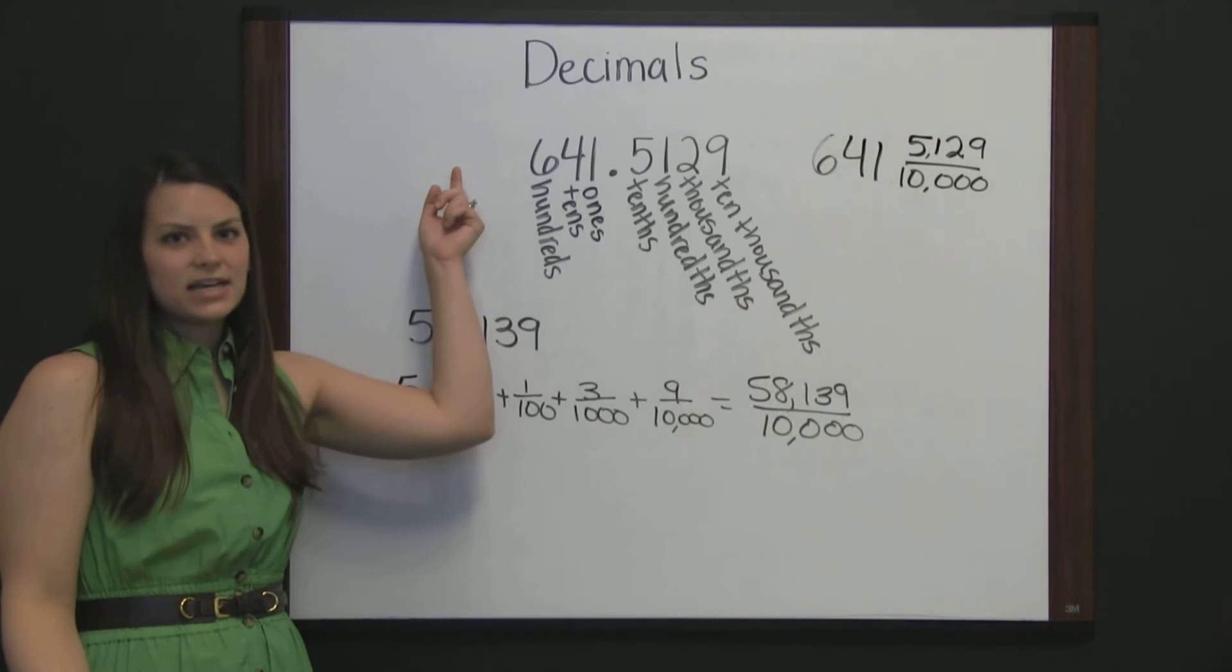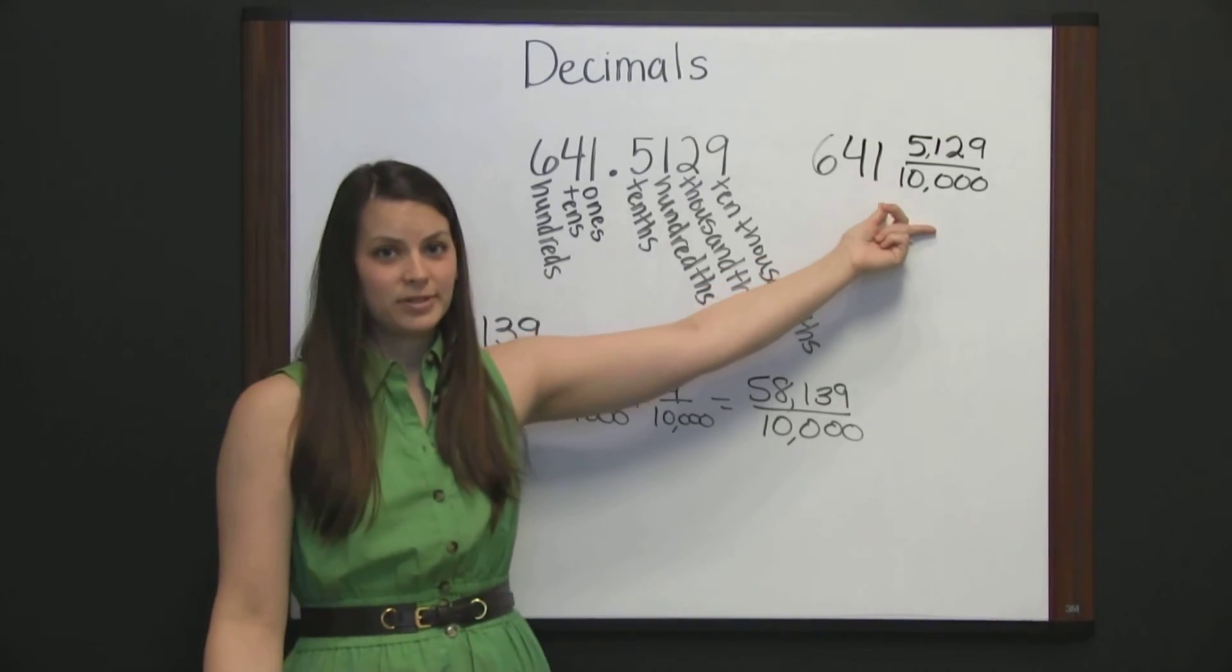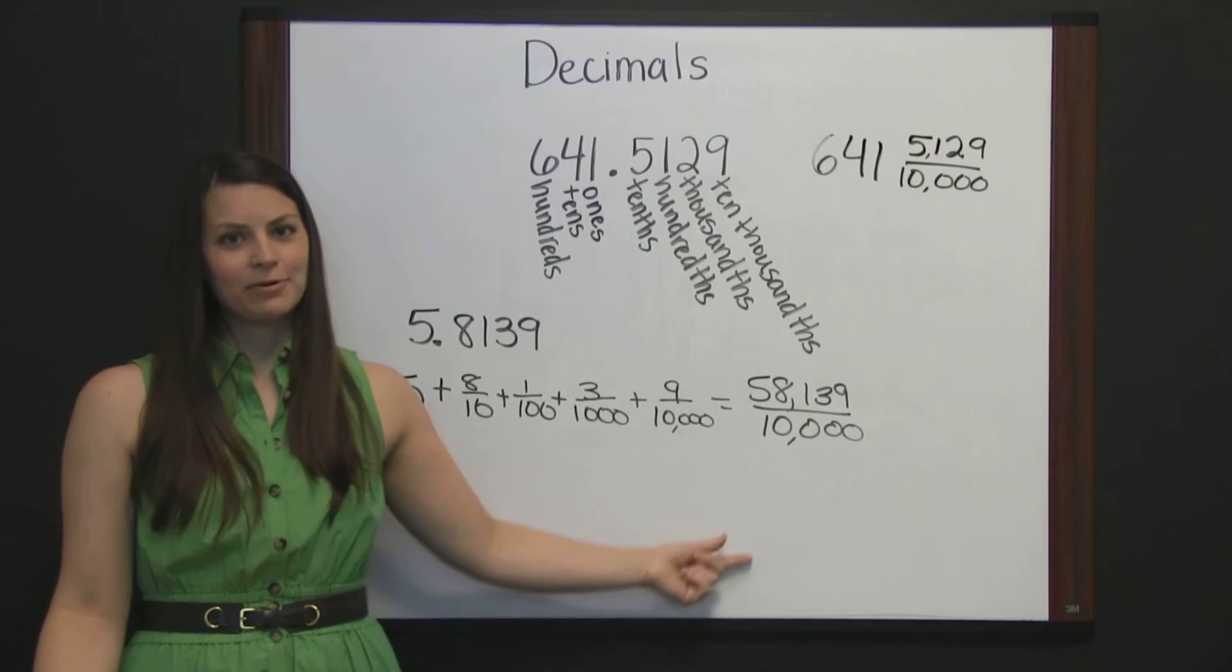So we've seen a decimal in decimal form. We've seen it represented as a mixed number, and also as an improper fraction.